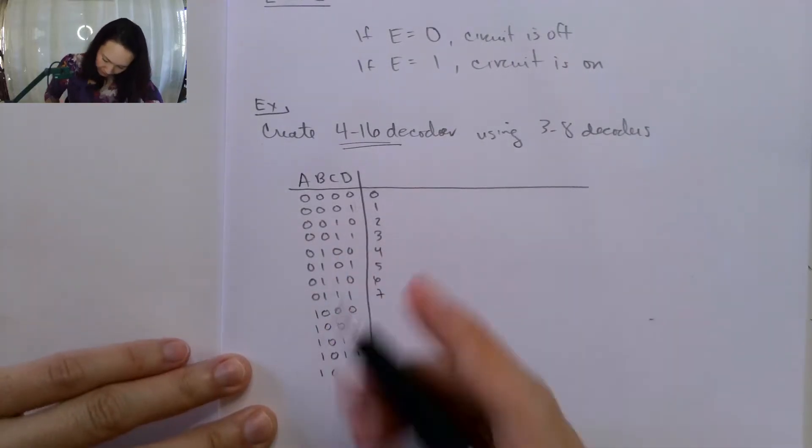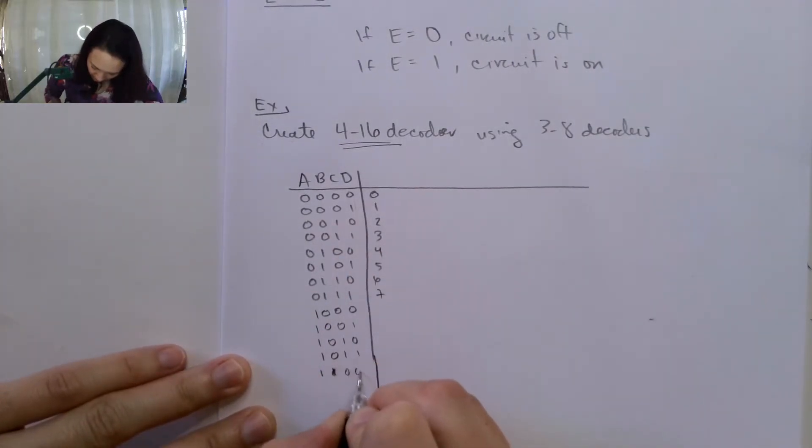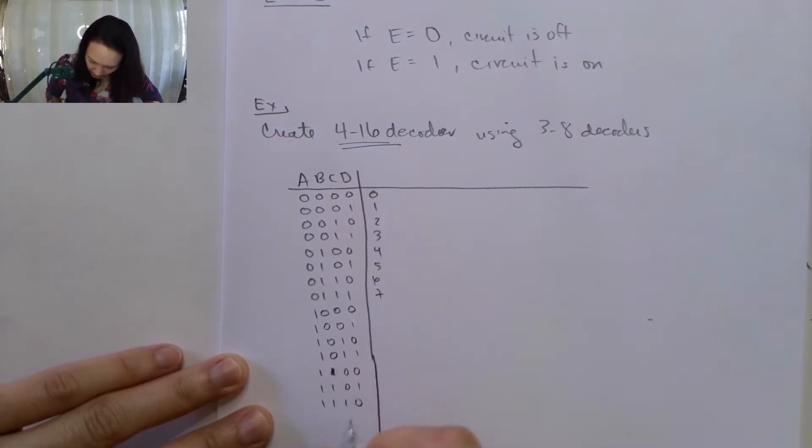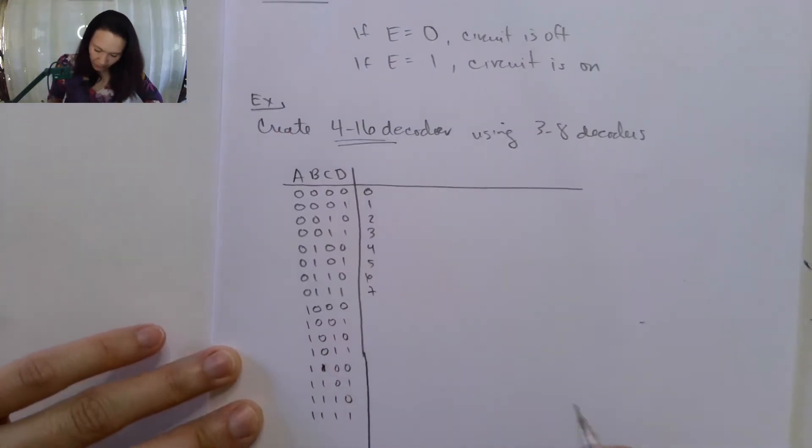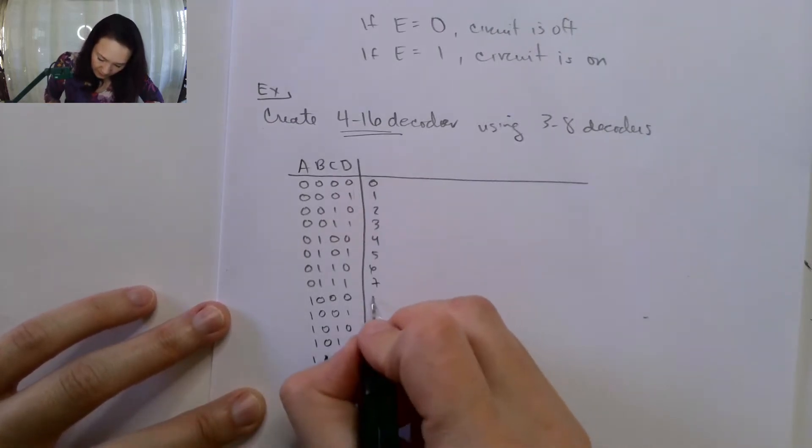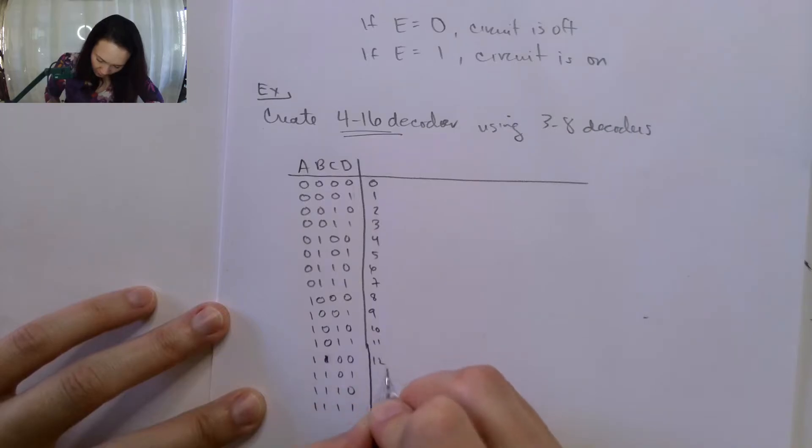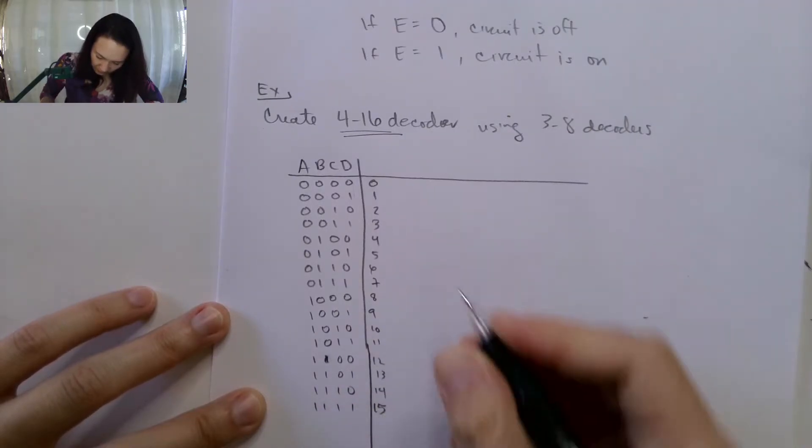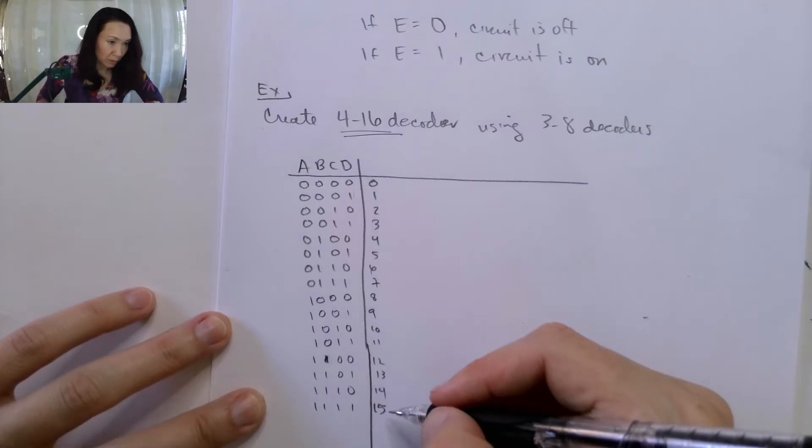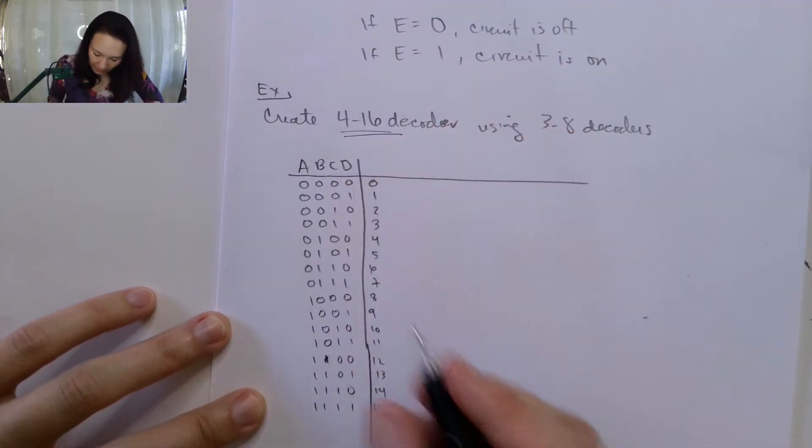Continuing the count to complete the truth table through decimal 15. This is going to correspond to the outputs 8, 9, 10, 11, 12, 13, 14, 15. So this is the decimal output that we want to produce from our binary inputs.